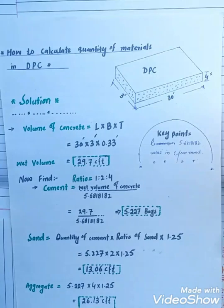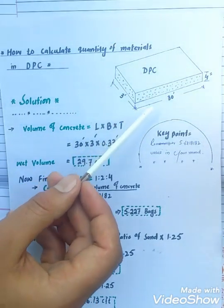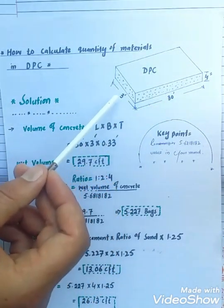Because the most commonly used ratio is 1 to 4, such as for slab, beam, column, and DPC. Now let's start with an example. This is DPC. The length is 30 feet, the breadth is 3 feet, and the thickness of DPC is 4 inch or 0.33 feet.